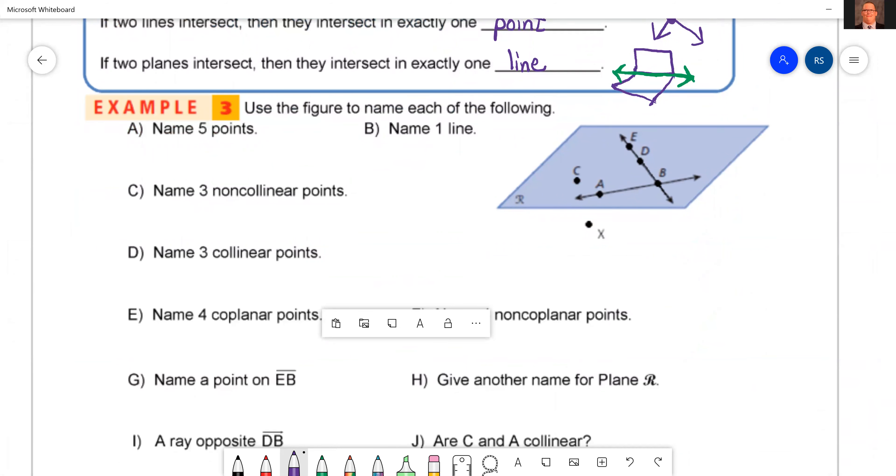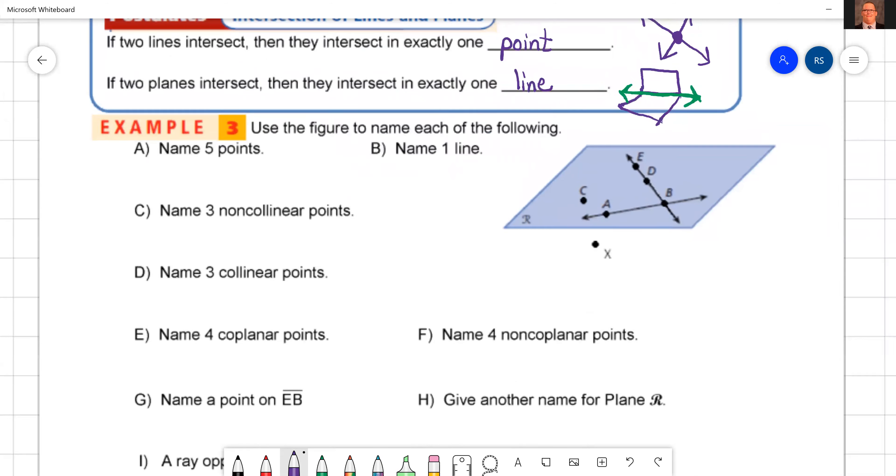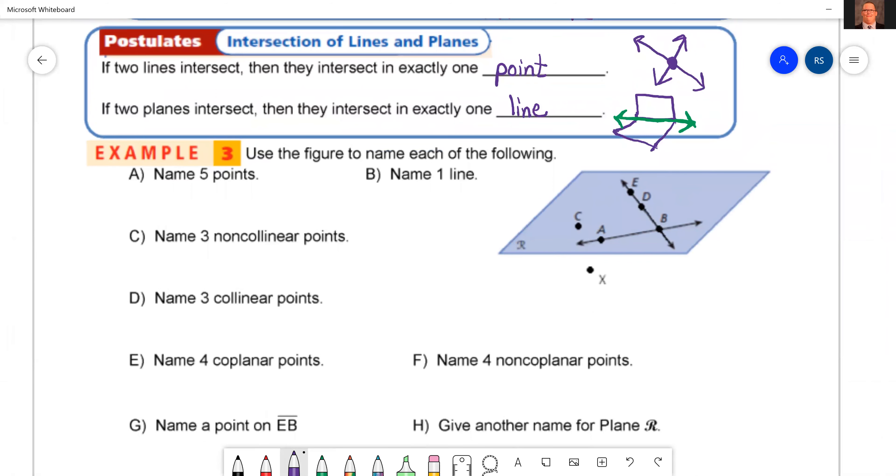Okay, now for the last big example. They want us to use this picture to name all of the following. Okay, so name five points. It can be any five points on this picture. I bet most of y'all probably said A, B, C, D, E.